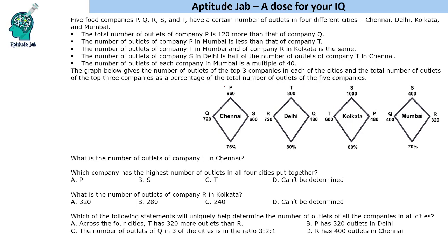In Chennai the top three companies are P, Q, and S. In Delhi the top three are T, R, and Q. Similarly S, T, P in Kolkata and S, Q, R in Mumbai. 75% means that these three occupy 75% of the total outlets, and 80% means 80% of the total outlets. So the other two will be 25%, and similarly the others will be 20%, 20%, and 30% respectively.